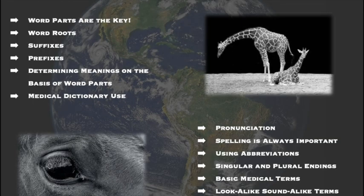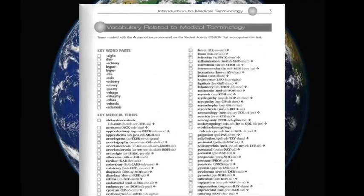Here you can see a breakdown of what we expect to learn in Chapter 1: word parts are the key — word roots, suffixes, prefixes, determining meanings on the basis of word parts, medical dictionary use, pronunciation, spelling, using abbreviations, singular and plural endings, basic medical terms, and look-alike and sound-alike terms. This is a good spot to check for every chapter — key word parts and key medical terms. These key medical terms you can guarantee will be on your test, and the key word parts are a good way to quiz yourself and make sure you're learning the material in appropriate time.